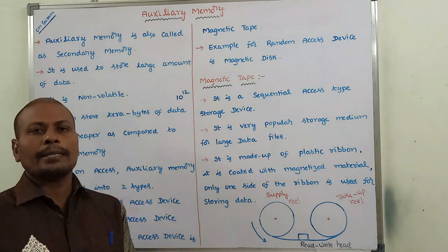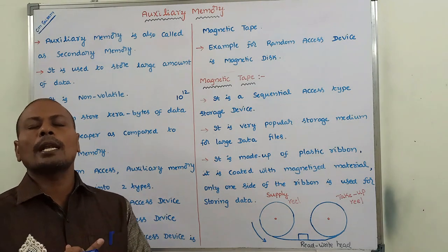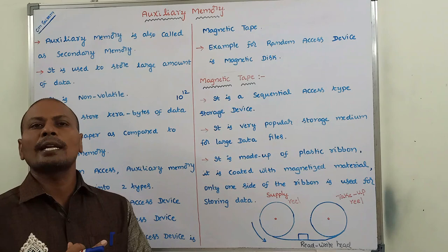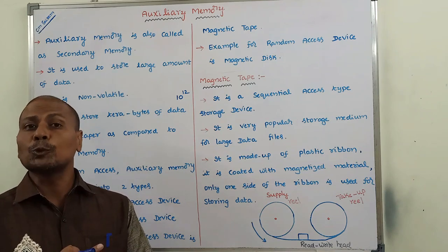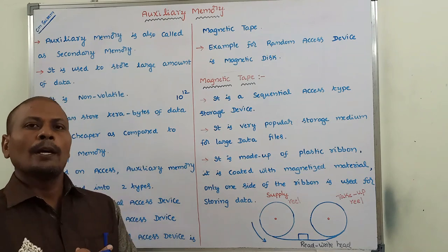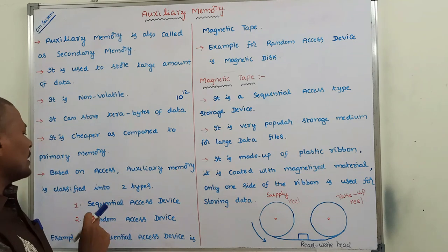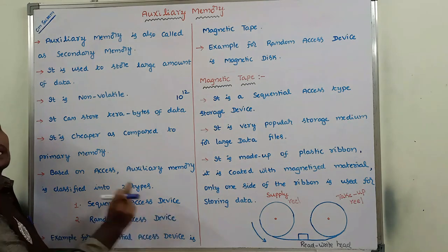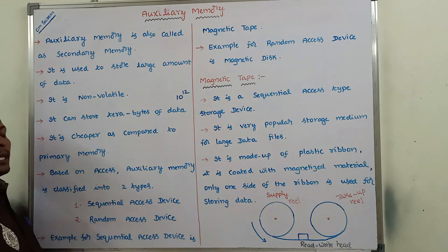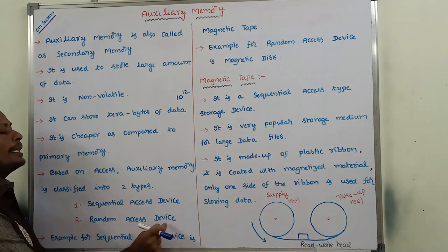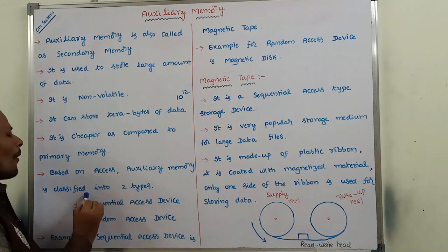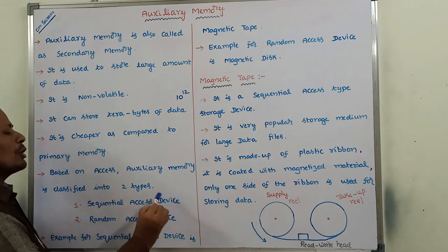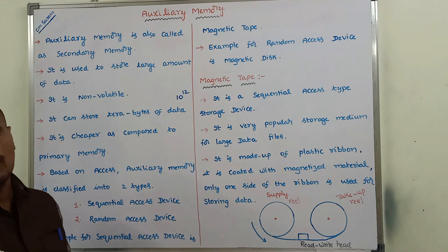Based on the access, auxiliary memory can be classified into two types. First one is sequential access device. Second one is random access device.